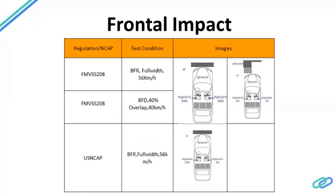For a frontal impact example, FMVSS 208 is an American standard. There are two types of tests: the first is a full-width barrier — a rigid wall — where the car is crashed at 56 km/h with Hybrid III 50th-percentile dummies. The second is an offset deformable barrier (ODB) crash where only 40% of the front end of the vehicle is available for energy absorption, making it even more critical than a full-width wall crash.